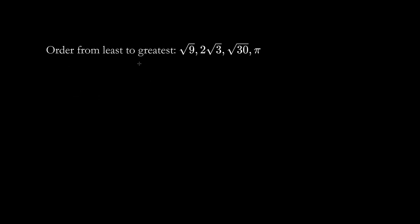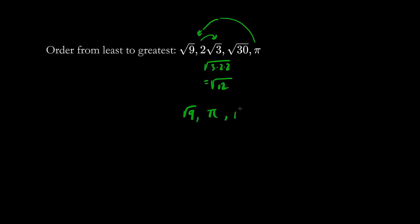Let's order from least to greatest. The square root of 9 equals 3. Let's make everything into an entire radical — we have the square root of 3 times 2 times 2, converting to an entire radical, so this second number equals the square root of 12, which is bigger than the square root of 9. The square root of 30 is even bigger. Pi is just slightly bigger than the square root of 9, at 3.14. So the order is: square root of 9, then pi, then square root of 12, and finally square root of 30 is the largest.